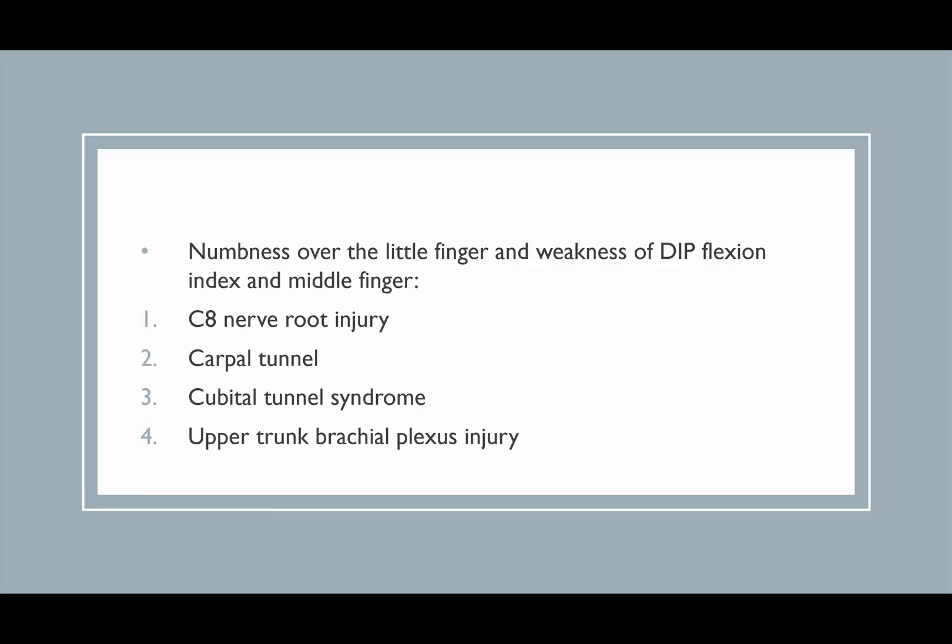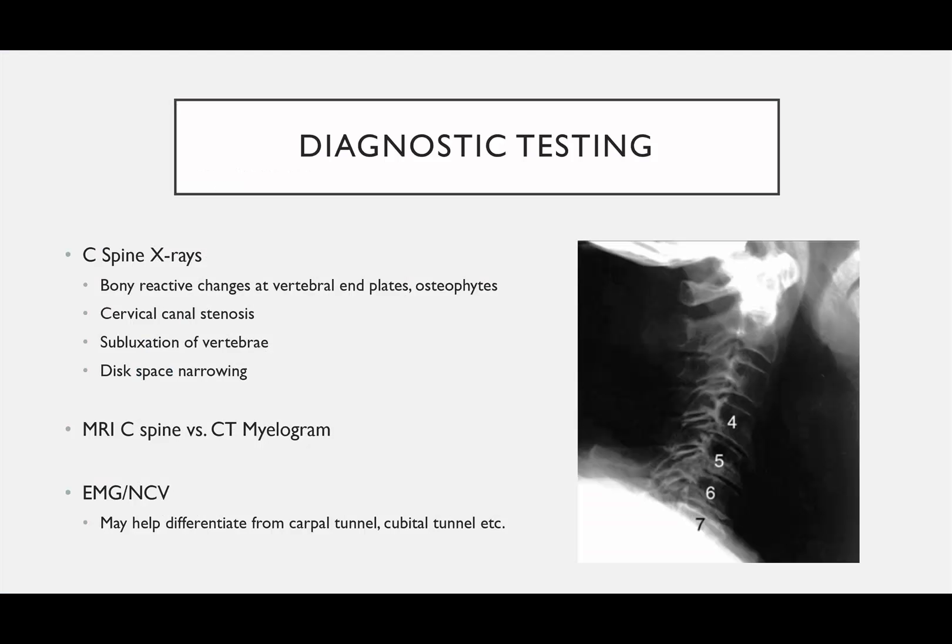Another question: numbness over the little finger and weakness of DIP flexion of the index and middle finger — that's the long flexors. Numbness over the little finger is the ulnar side of the hand. Referring back to the dermatome slide, the C8 dermatome covers the ulnar side of the hand, and C8 controls the long finger flexors. So the answer is C8.